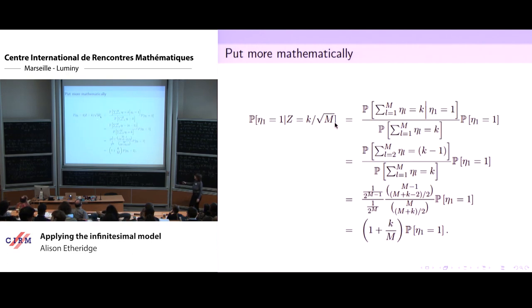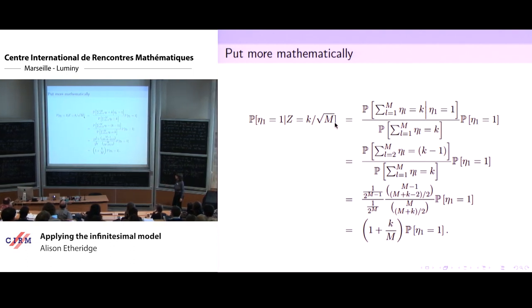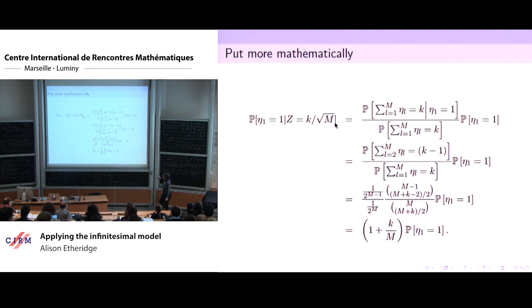More mathematically: suppose you tell me that the trait value is k over square root of m — what do I know about the first Bernoulli variable? By Bayes' rule, the probability it takes the value one is the probability that the sum of the remaining m−1 variables equals k−1, divided by the probability the whole sum is k. Substituting, we obtain an expression: the probability that the first allele took value one given the trait value is k/√m is (1 + k/m) times the prior probability.